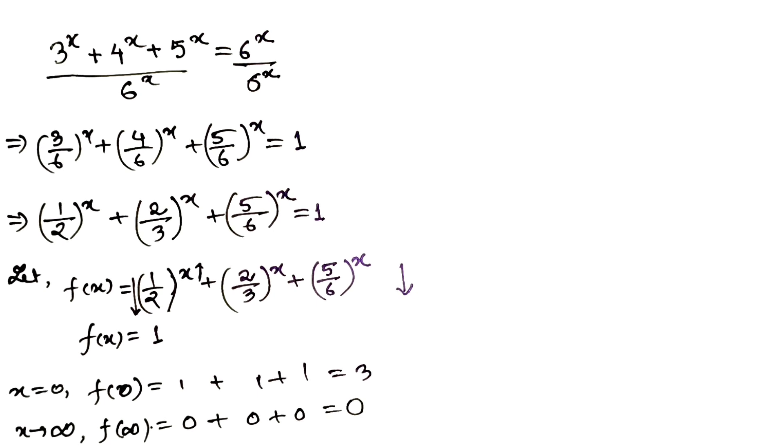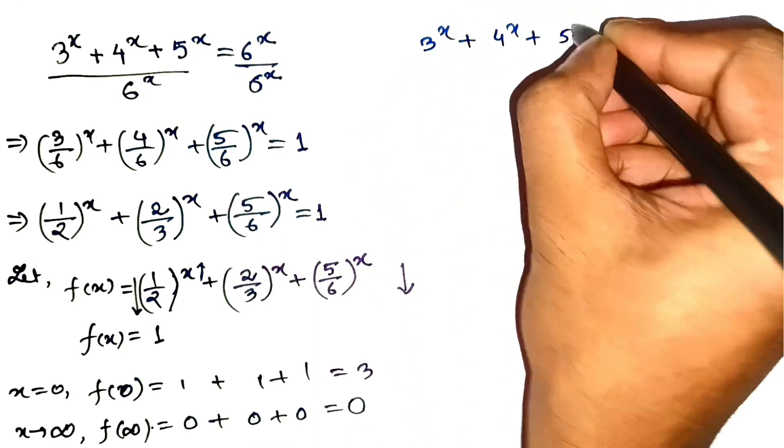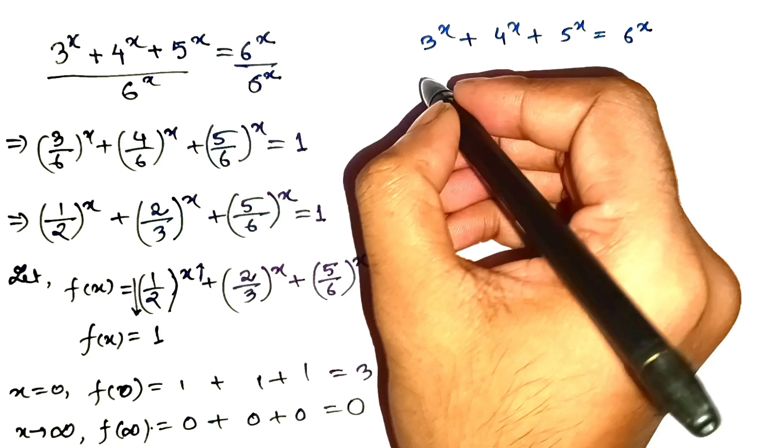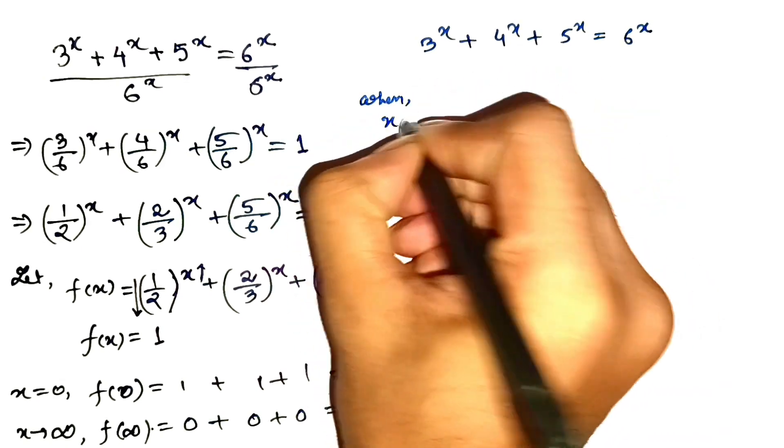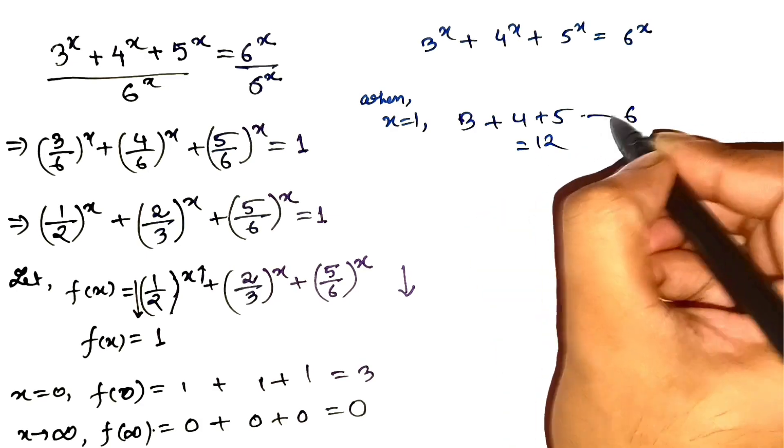There is an x, and there's only one. Now it's time to hunt which x makes this balance. Let's test integers. Rapid fire. Test x equals 1. Left side is 3 plus 4 plus 5 equals 12, right side is 6. Nope, too big.